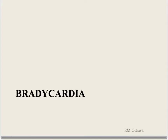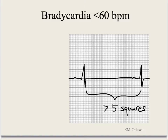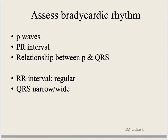Bradycardia is defined as a ventricular rate of less than 60 per minute. On a standard speed ECG rhythm strip, there will be more than 5 squares between the QRS complexes — 5 squares also equals 1 second. To assess a bradycardic rhythm, we look at whether there are P waves, the PR interval, the relationship between P and QRS, whether there is a QRS after every P, the RR interval regularity, and whether the QRS complexes are narrow or wide.